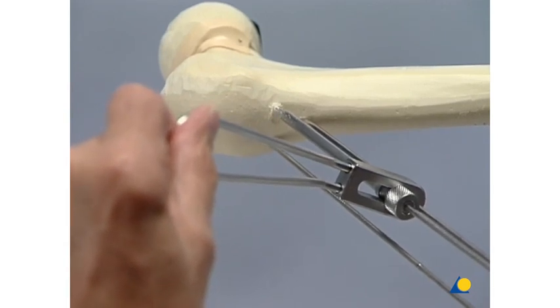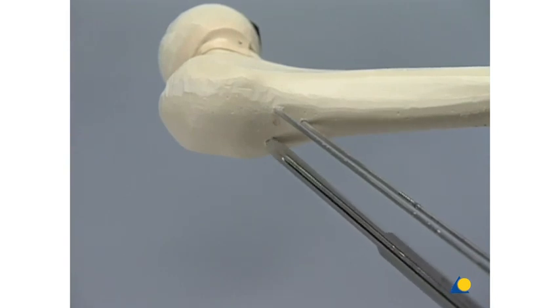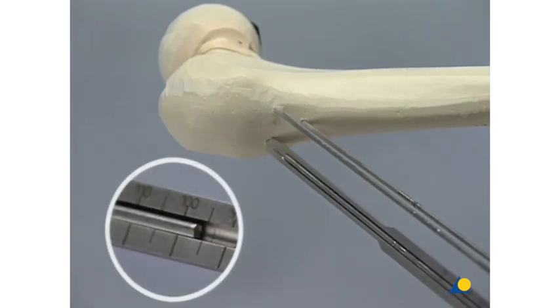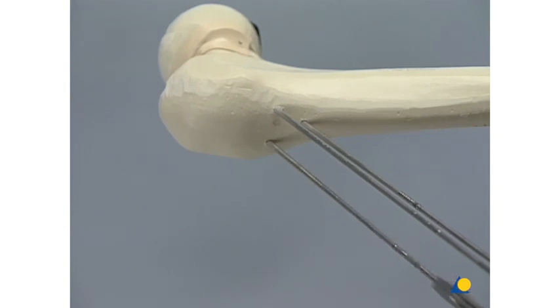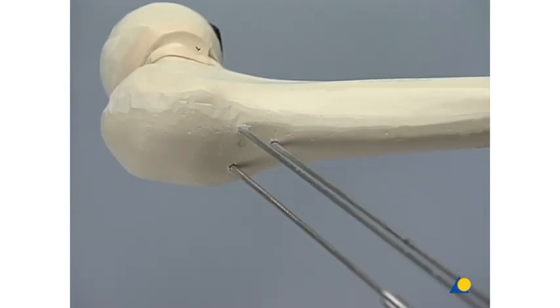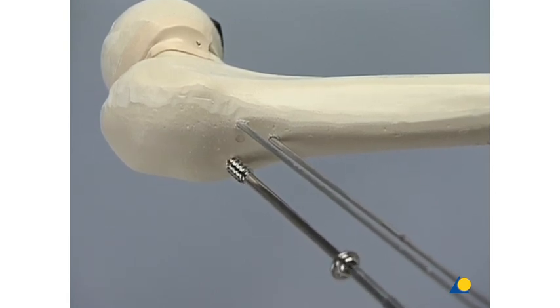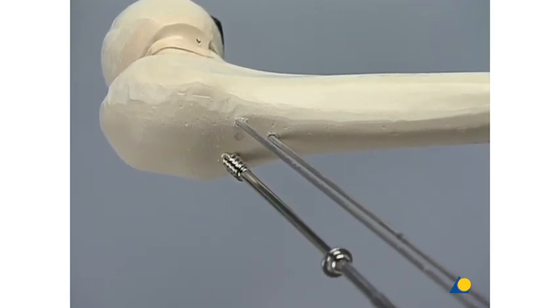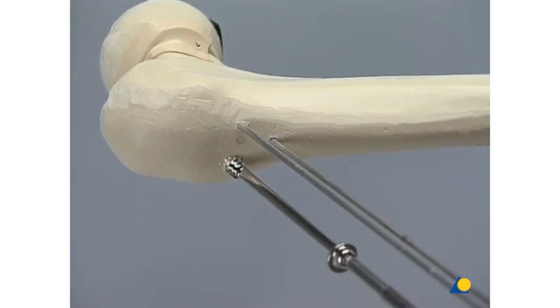Measurement of the screw length using the direct measuring device. The new self-drilling and self-tapping 7.3 millimeter screw can now be inserted with the cannulated screwdriver. Only in very hard cortical bone will it be necessary to pre-drill the near cortex with a 4.5 millimeter drill bit.